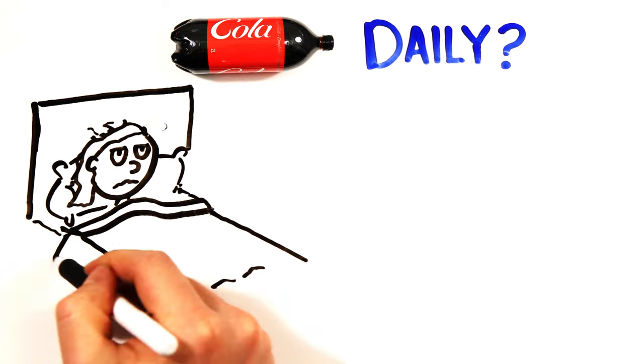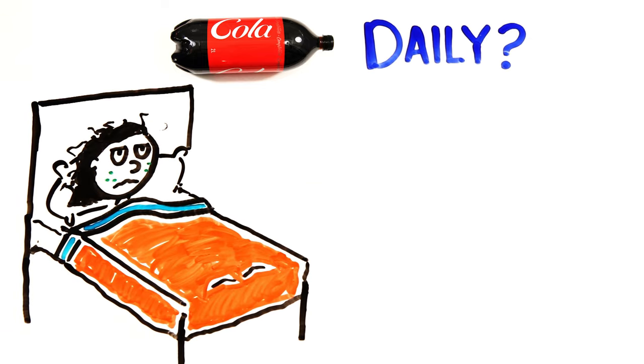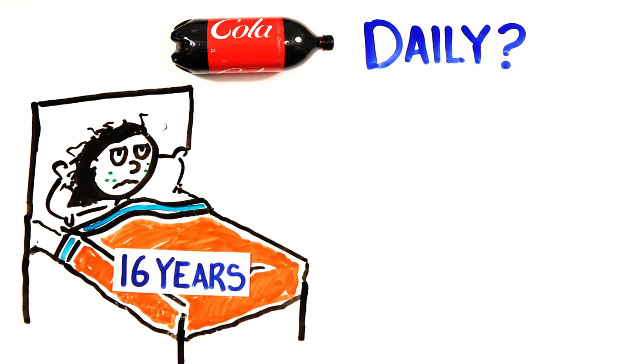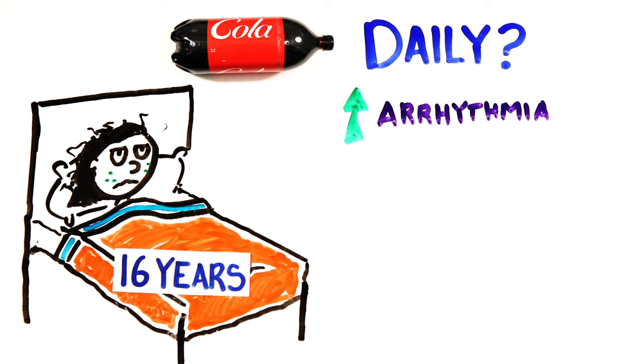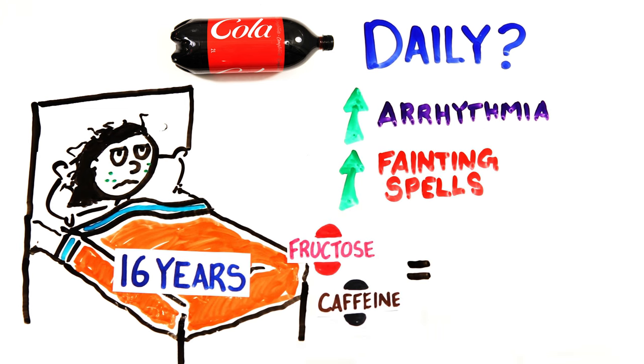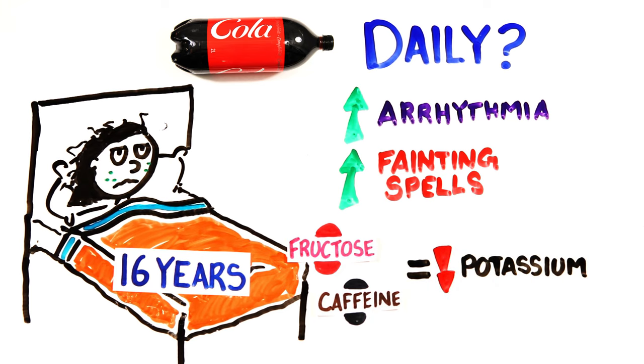So what if you drank 2 liters of pop every day? Well, one woman did just that for 16 years straight until she was hospitalized at age 31. With no family history of heart problems, she suffered from arrhythmia and fainting spells, and tests found her severely deficient in potassium as both fructose and caffeine can lead to potassium loss through urine and diarrhea.